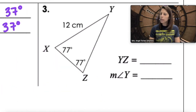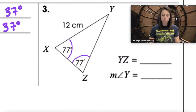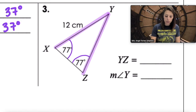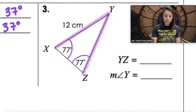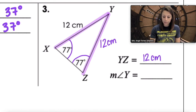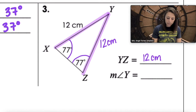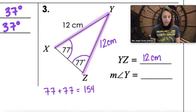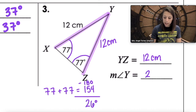In triangle number three, we're given that two angles are equal to each other. If the angles are equal, the opposite sides are also equal. So because the base angles are equal, the legs are also equal. If XY is 12, then YZ is also 12 centimeters. To find angle Y: 77 plus 77 is 154, and 180 minus 154 gives us 26 degrees.